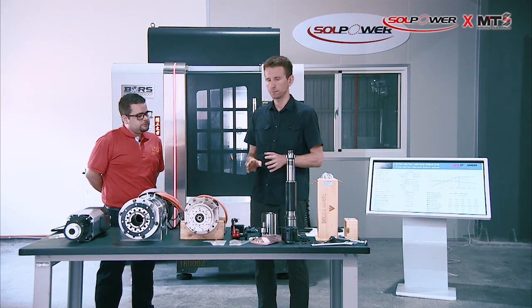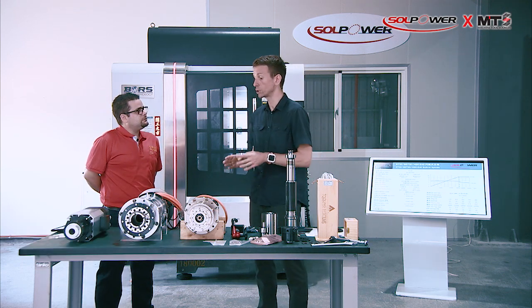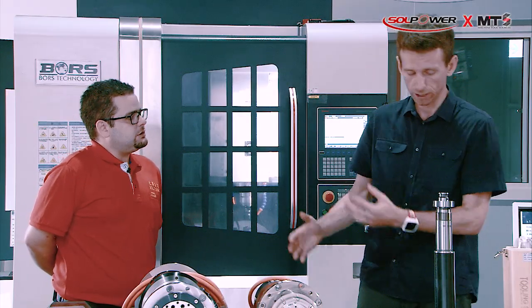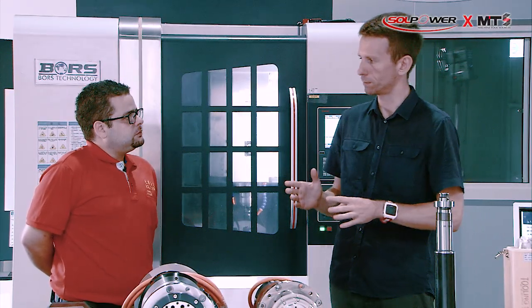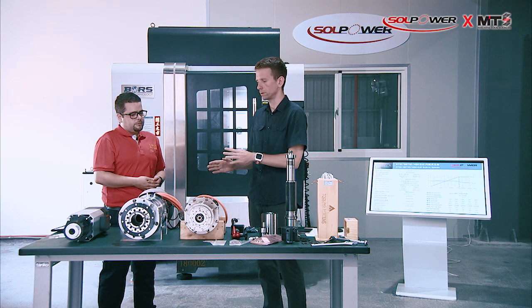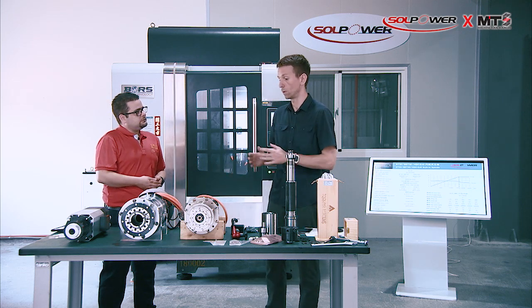We talked about saving space, but there are more advantages of a motorized spindle compared to other spindle types. What are the main advantages? The main advantages are high speed, high precision, low vibration, very small size, and very easy to install.